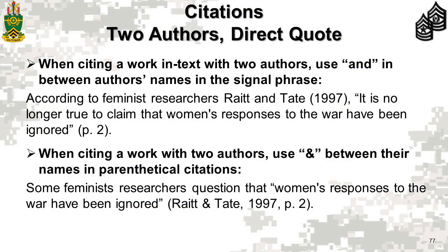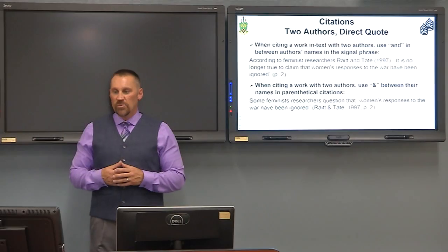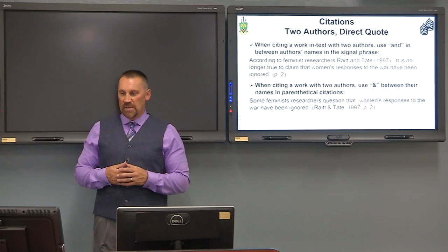For citations with multiple authors, the only thing to note is that you use the word 'and' during an in-text citation — for example, 'Rate and Tate (1997)' — whereas in a parenthetical citation, you use the ampersand symbol instead of the word 'and' between author names.